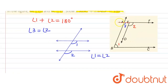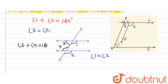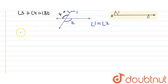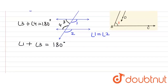Now considering line AF and line BC — both are parallel — and AB is a transversal. So the sum of the interior angles, that is angle 3 and angle 1, will be equal to 180 degrees. This is because when two lines are parallel and are intersected by a transversal, the sum of interior angles on the same side of the transversal equals 180 degrees. Therefore, angle 1 plus angle 3 is equal to 180 degrees.